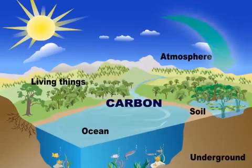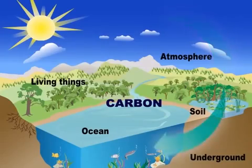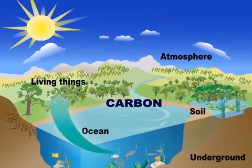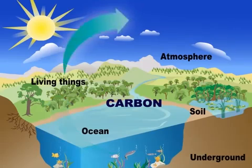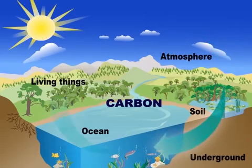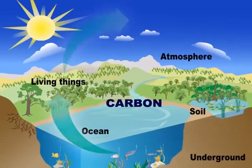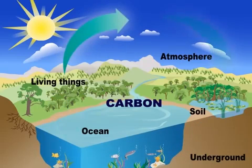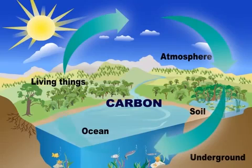Carbon doesn't stay in one place or in one form. Instead, it moves around between different parts of the Earth. This process is called the carbon cycle.